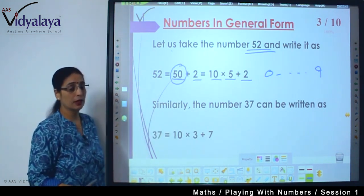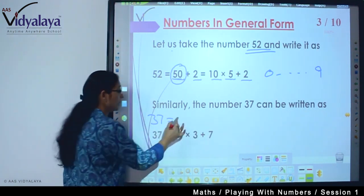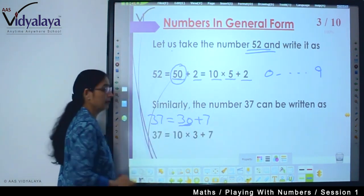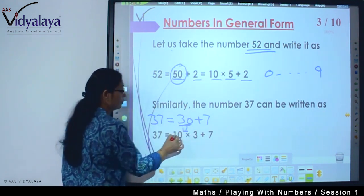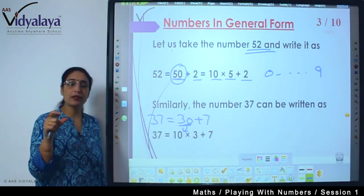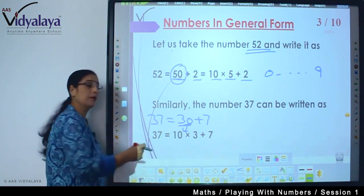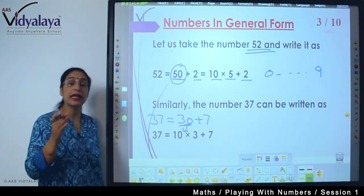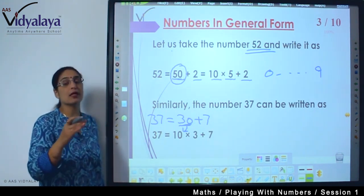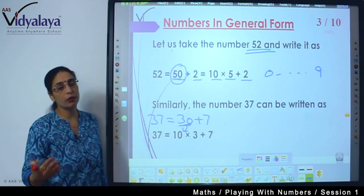Similarly, 37 can be written like this: the basic form means 30, when we add 7 it will become 37. But how can 30 be written? 30 can be written like 10 into 3. So when we are speaking 37, 30 means we are talking about 3, but it's at the tens place. So 37 means 30 plus 7. So if you understand what you are speaking, then you will find no difficulty in finding out place value.